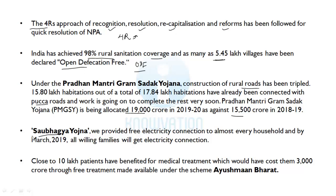Saubhagya Yojana provided free electricity connections to almost every household. By March 2019, all willing families will get an electricity connection. If a question comes about which scheme provides free electricity connections, the answer is Saubhagya Yojana — you must know the name of this scheme.